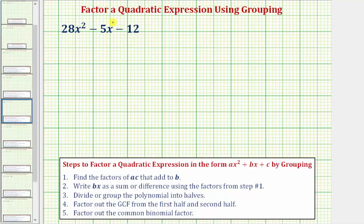Welcome to an example on how to factor a quadratic expression using the technique of factor by grouping. Here we want to factor 28x squared minus 5x minus 12 using the factor by grouping technique.